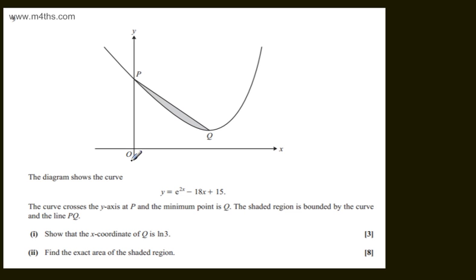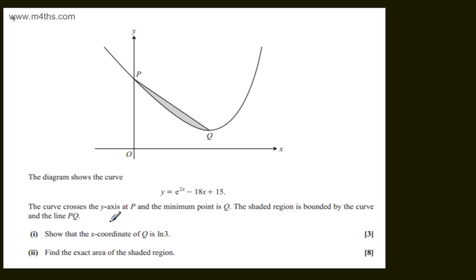This is question number 9. We're told the diagram shows a curve y equals e to the 2x minus 18x plus 15. The curve crosses the y-axis at P and the minimum point is Q. The shaded region is bounded by the curve and the line PQ. In the first part of the question, for 3 marks, we need to show that the x-coordinate of Q is ln of 3.